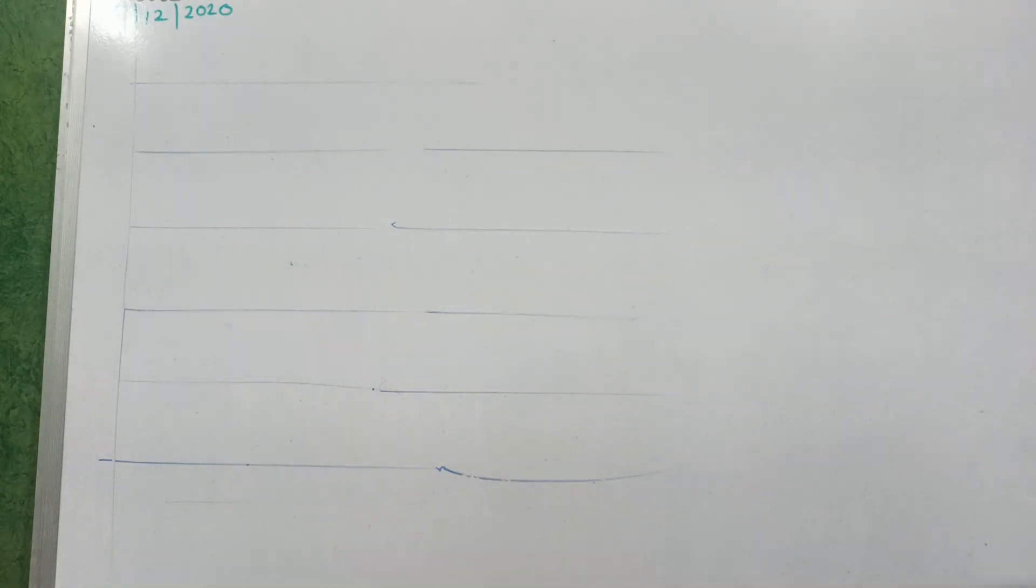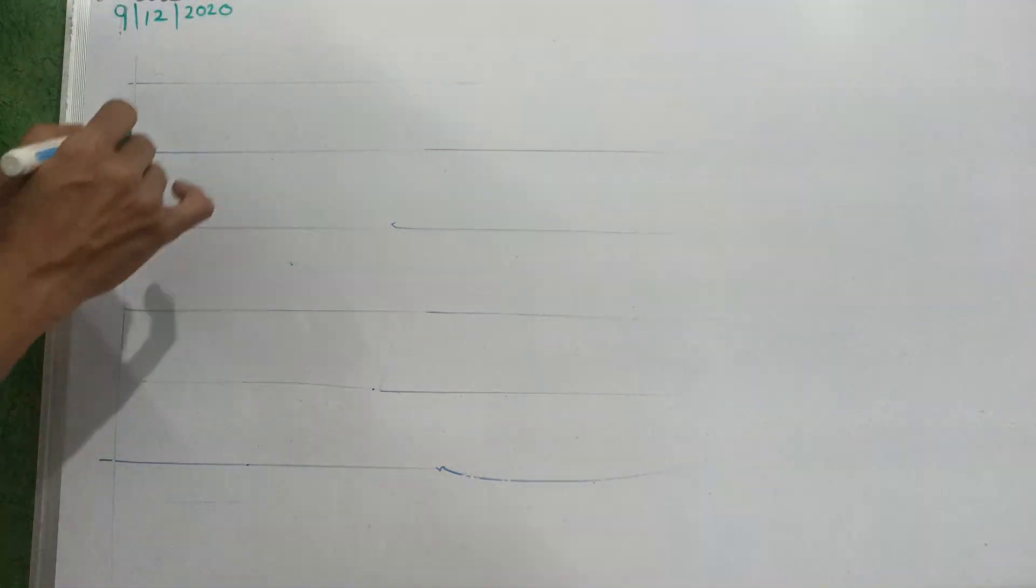Okay. Chalo. Write date, date, date, and today's date is 9th December. Okay. Chalo.